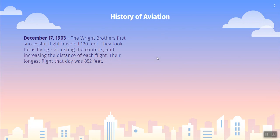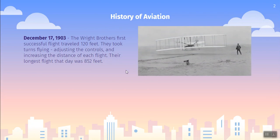This is the start of what many believe to be modern aviation, with the planes and aircraft that we are used to seeing today. But people have had their heads — and sometimes the rest of their bodies — in the clouds for hundreds of years. In fact, the first recorded uses of kites date all the way back to 400 BC. Leonardo da Vinci had sketches of his flying machine in the 1400s and 1500s. And the first actual manned flight, a human using a glider, happened in the 1700s. But when it comes to propelled aviation, or a heavier-than-air aircraft, that happened in 1903.